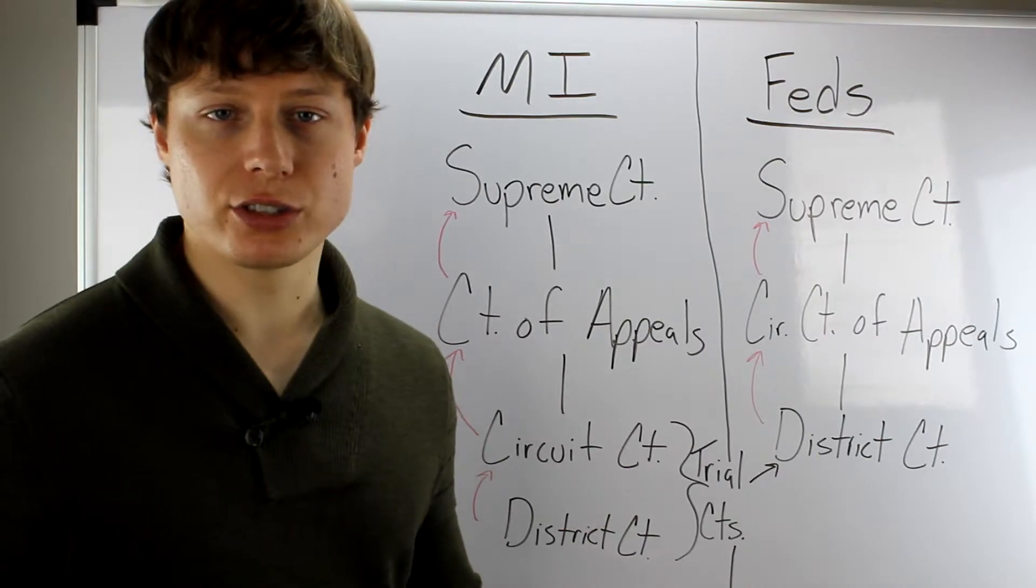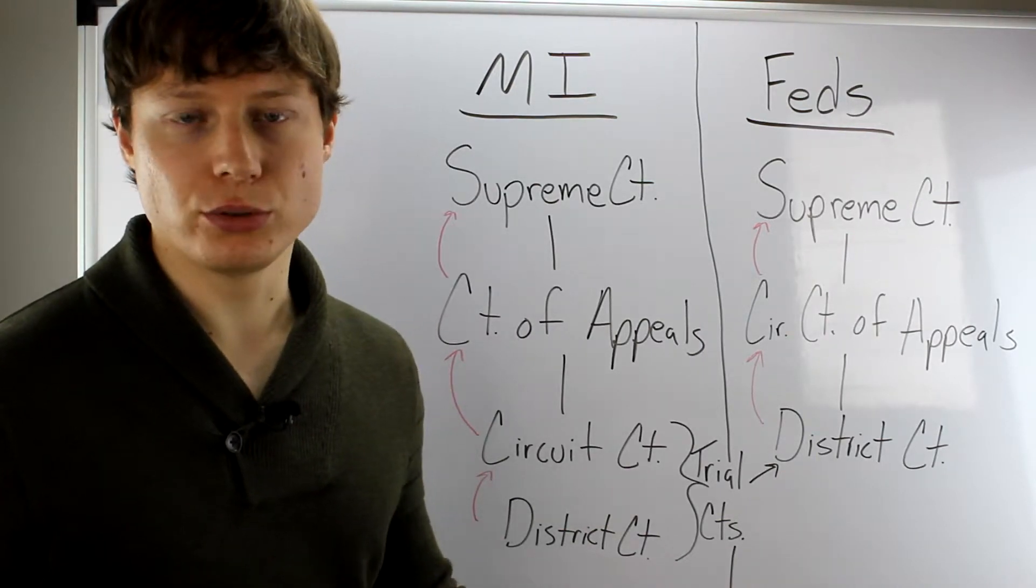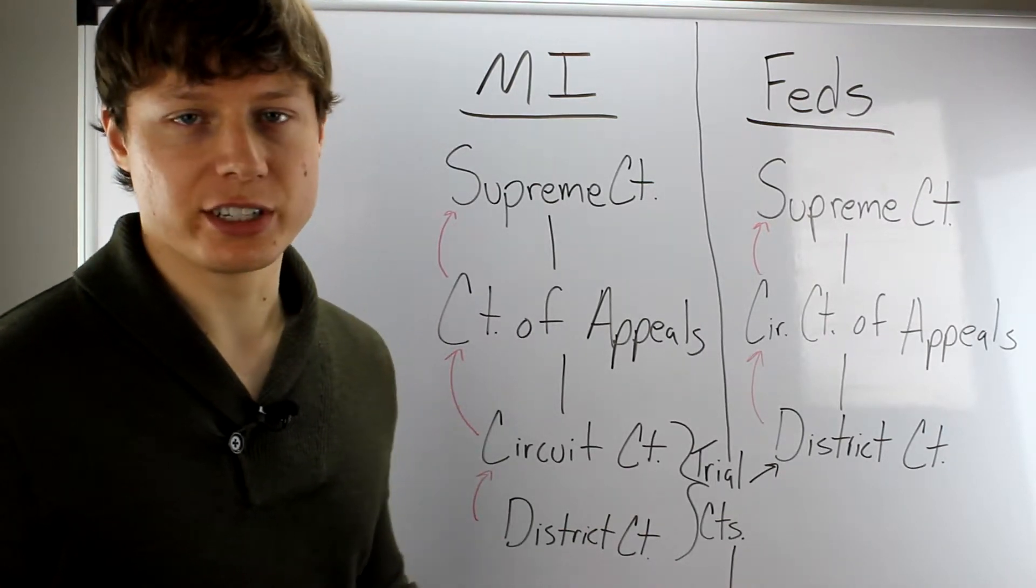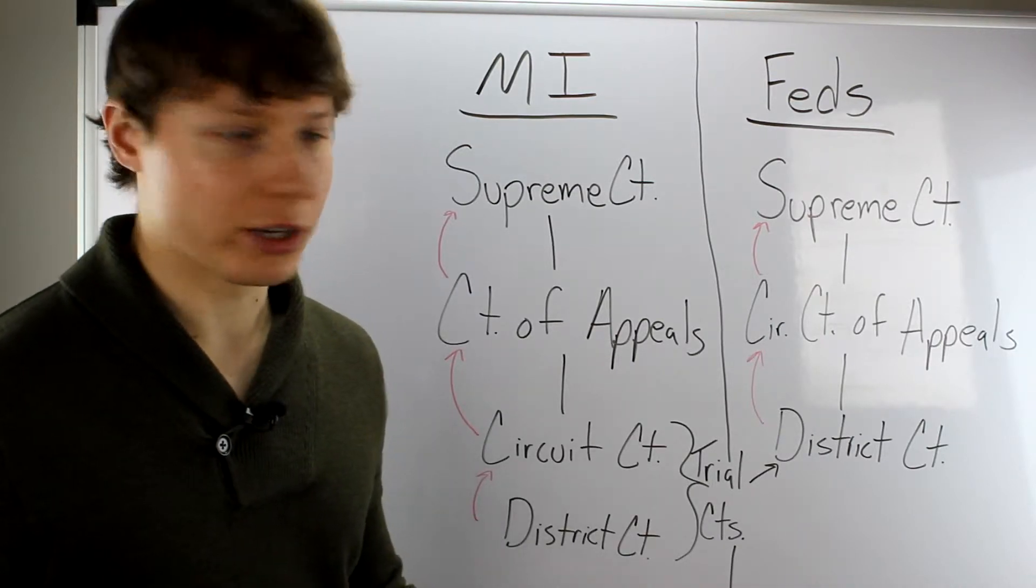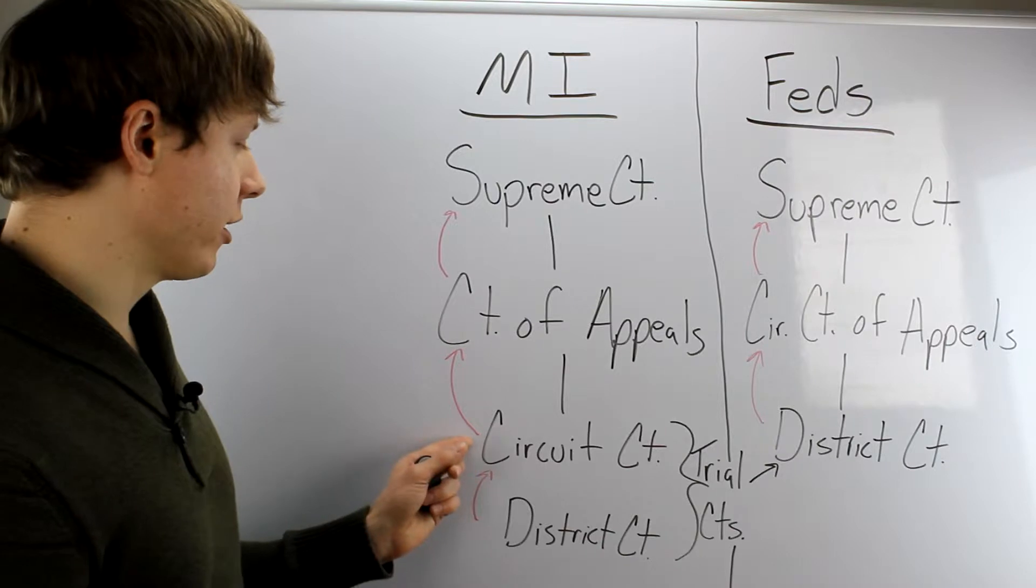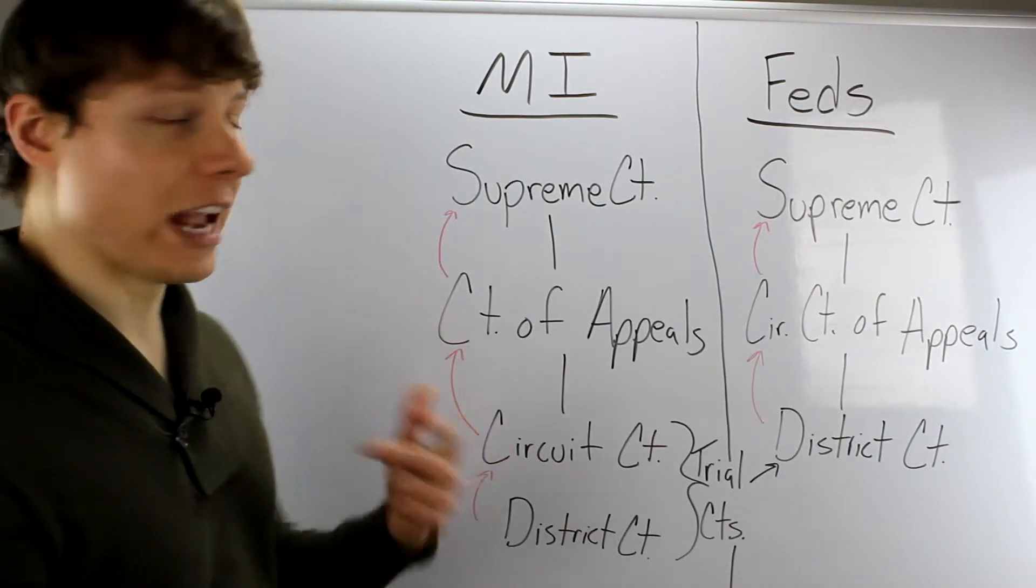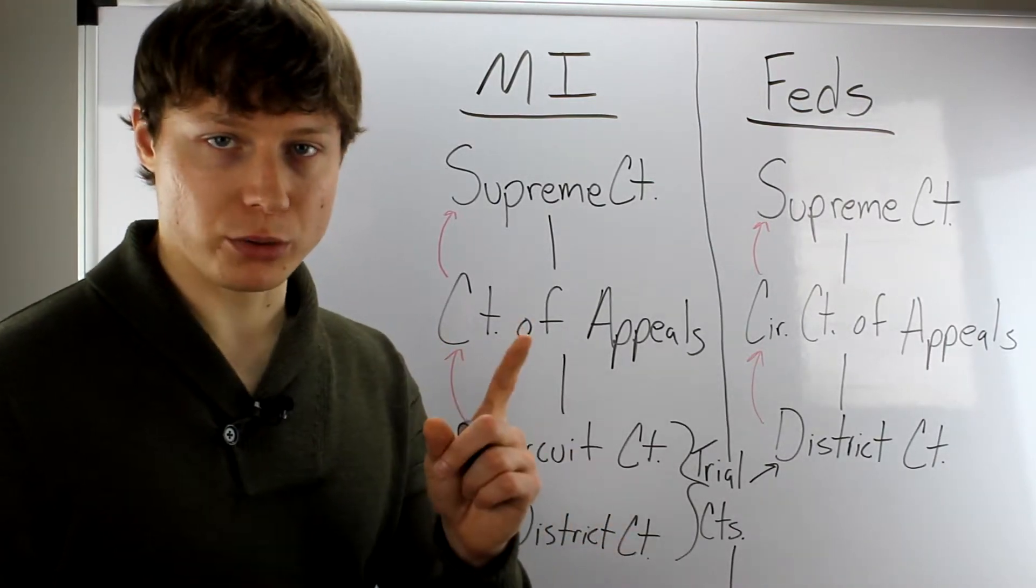Let's imagine that you started in circuit court, right? And you lose there. Instead of starting in district court, you start in circuit, you lose, you want to appeal that decision. Where are you going to go? You're going to go up one tier. So you're going to go to the court of appeals. Every single time you go up one only.